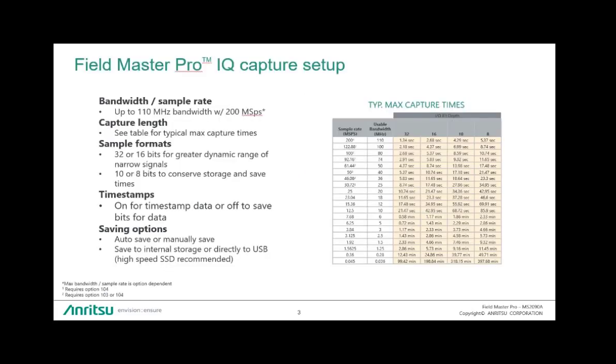So our Fieldmaster Pro specifically offers never-before-seen functionality in a handheld spectrum analyzer. We offer 110 megahertz of capture bandwidth, which is done at a 200 mega sample per second speed. We have different capture lengths, we've opened up a full 2 gigabytes of RAM dedicated to IQ capture, which essentially means that when you're doing these wide captures, you can still get, if you look at our table here on the right, at full bit depth, 1.34 seconds of capture.